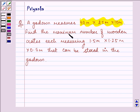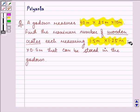Find the maximum number of wooden crates each measuring 1.5 meter into 1.25 meter into 0.5 meter that can be stored in the godown.